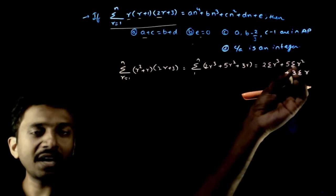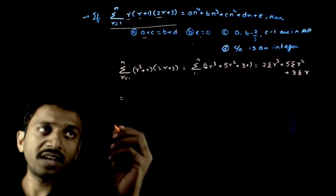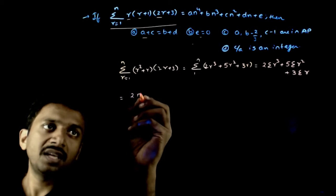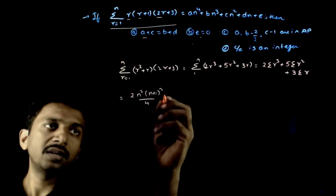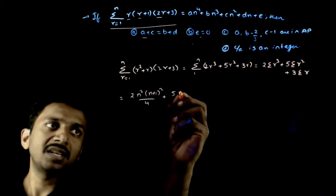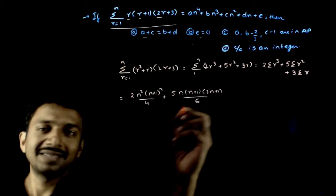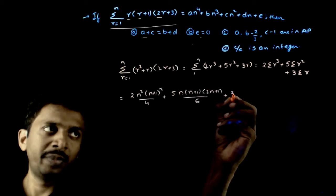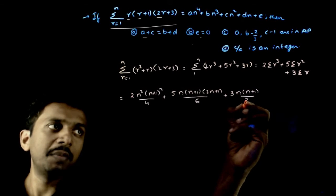That can be written as 2 times sigma r cube plus 5 times sigma r square plus 3 times sigma r. And you know the formulas for sigma r cube, sigma r square and sigma r. Substitute them and simplify: 2 times n square into n plus 1 whole square by 4 plus 5 times n into n plus 1 into 2n plus 1 by 6 plus 3 times n into n plus 1 by 2.